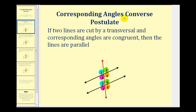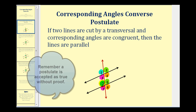The corresponding angles converse postulate tells us that if two lines are cut by a transversal and the corresponding angles are congruent, then the lines are parallel. You can see below that I've color-coded the corresponding angles, so if any of these pairs of corresponding angles are congruent, we can conclude that the lines would be parallel.